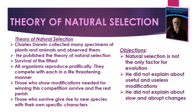The theory of natural selection was put forth by Charles Darwin. He collected many specimens of plants and animals, observed them, and published his theory of survival of the fittest. He says that all organisms reproduce prolifically and compete with each other in a life-threatening manner. Those plants and animals that show modifications needed for winning this competition survive, and those who survive give rise to a new species with specific characteristics and the will to survive.